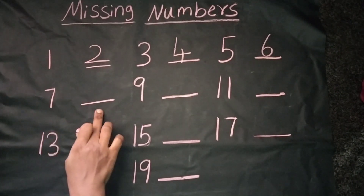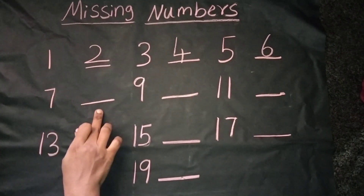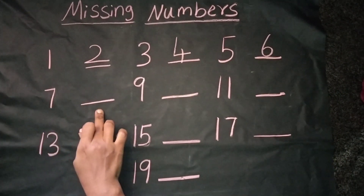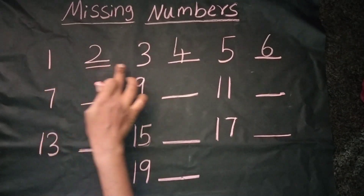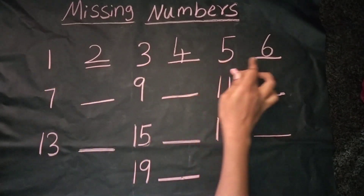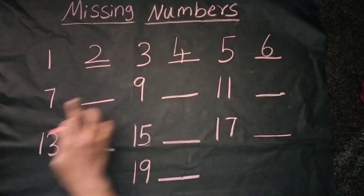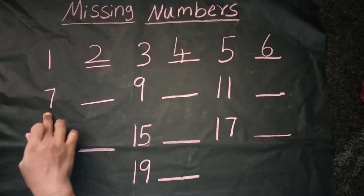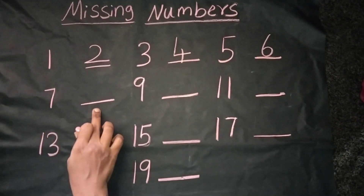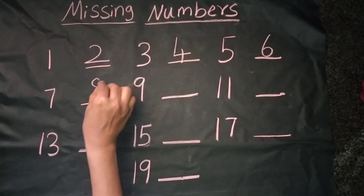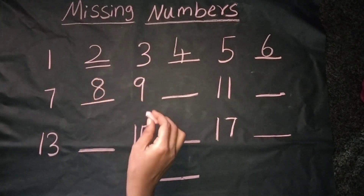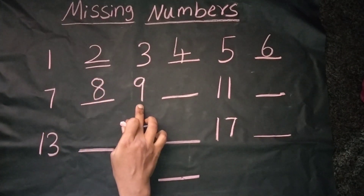The next number is — let's count from 1: 1, 2, 3, 4, 5, 6, 7, 8. Yes, it's correct. The number is 8. We can see the number 9.